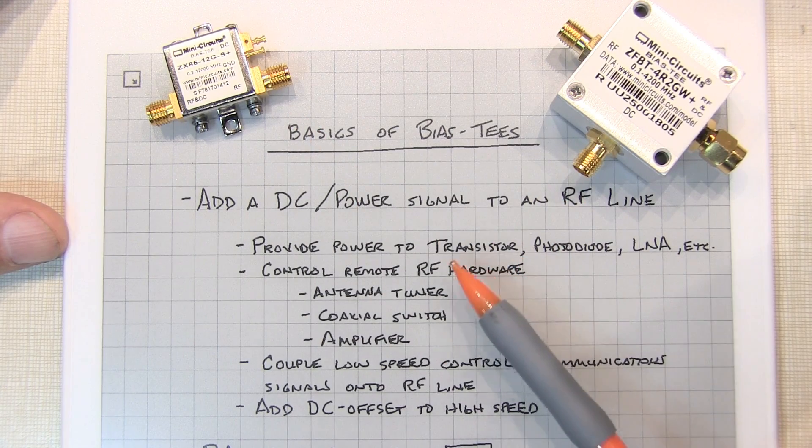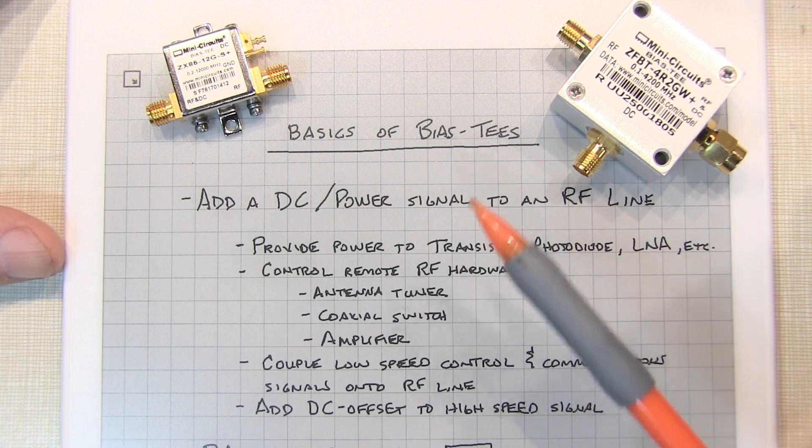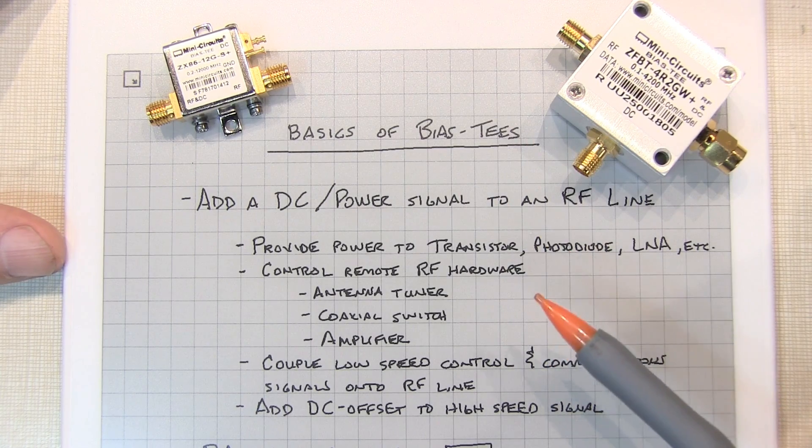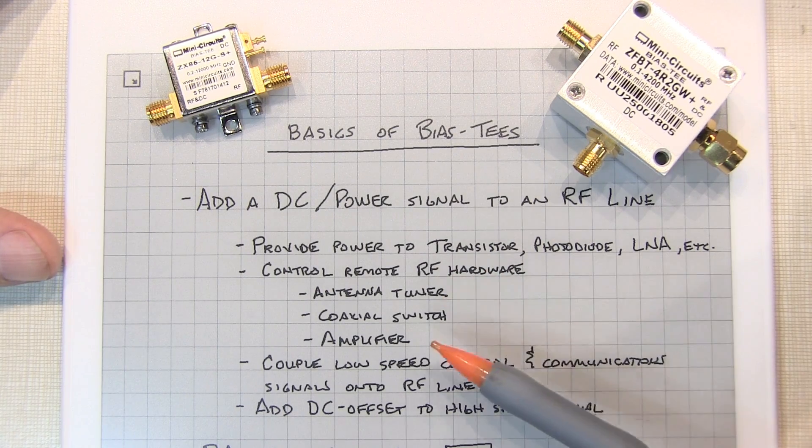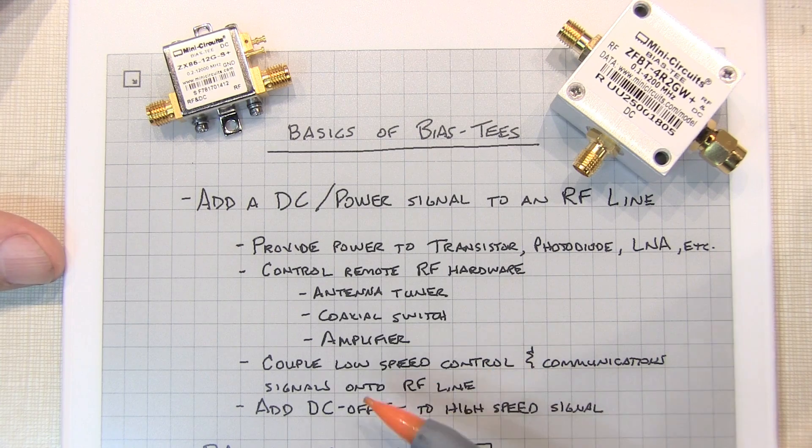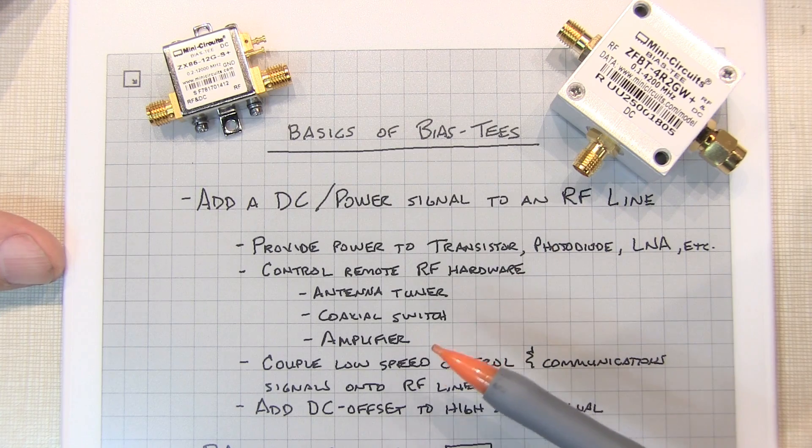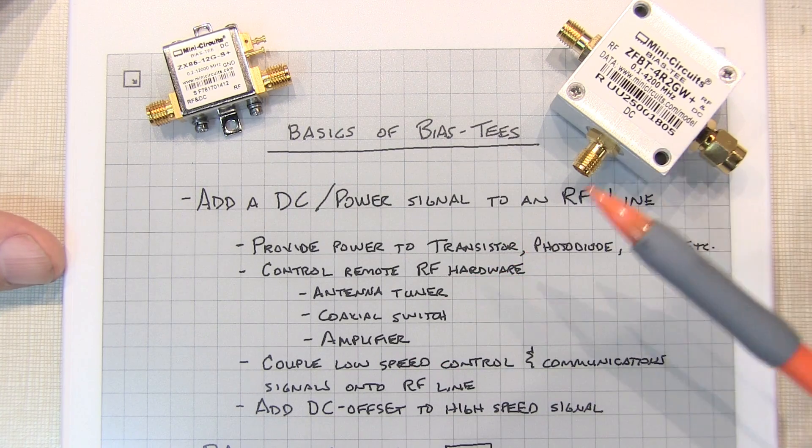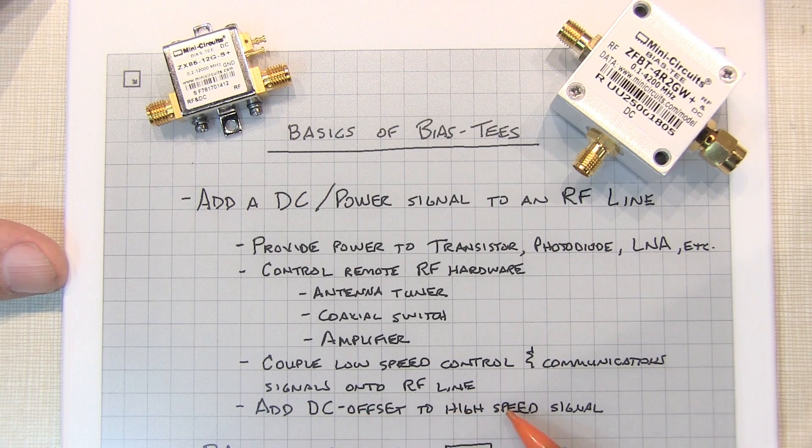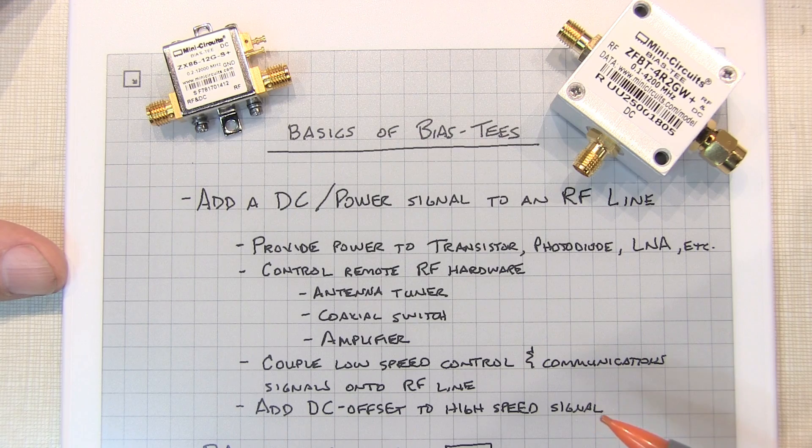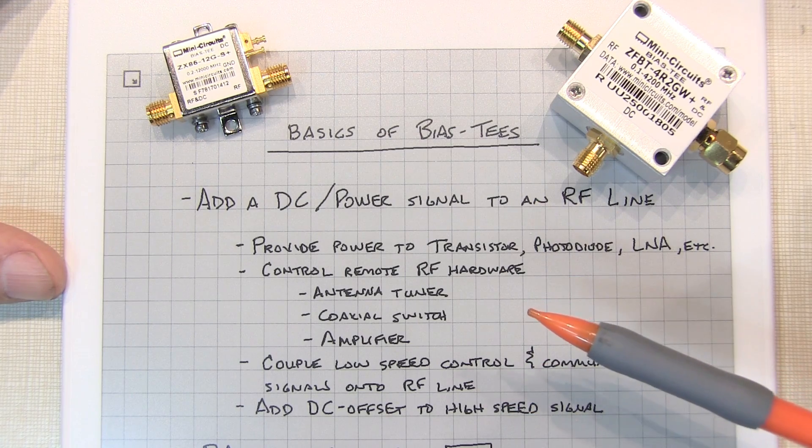You might want to do this to power up a transistor, a photodiode, a laser diode, a low noise amplifier or something like that that might be at the far end of an RF line. Even control remote RF hardware such as an antenna tuner or coaxial switch or even an RF amplifier. You may also want to couple low speed control and communication signals onto an RF line to maybe communicate with some remote RF hardware that's at the far end of a piece of coax. Or even add a DC offset to a high speed signal such as a high speed serial signal. We'll go into some of these applications in a bit more detail later in the video.